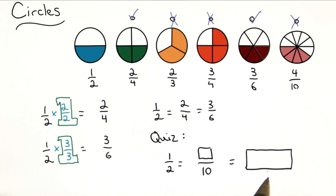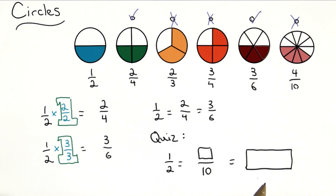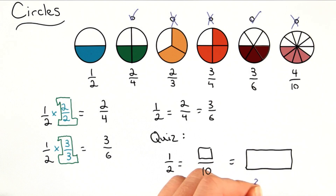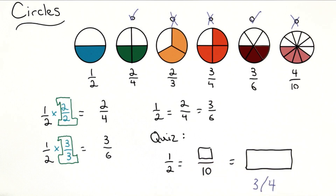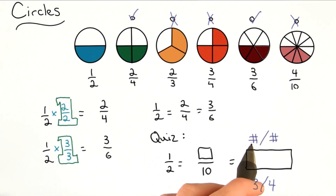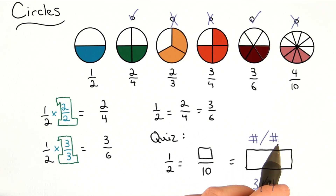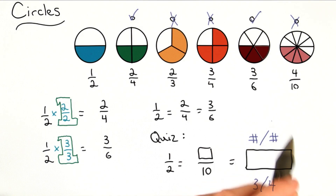I want you to write in your own equivalent fraction for 1 half. You can write any fraction in this box. You want to put an answer like 3 slash 4, or 3 divided by 4, 3 fourths. You can put your answer in as a number, a slash, and then another number. Just make sure that it's equal to 1 half.